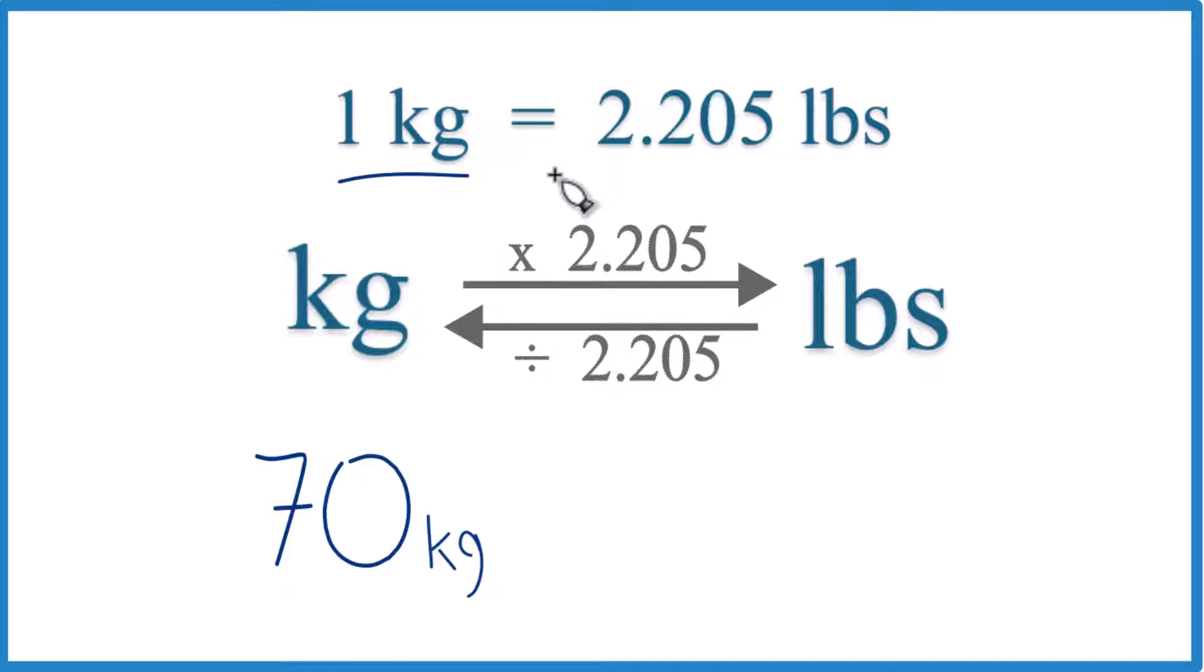Well, one kilogram equals 2.205 pounds. We call this a conversion factor, and you need to know that if you're going from kilograms to pounds or pounds to kilograms.